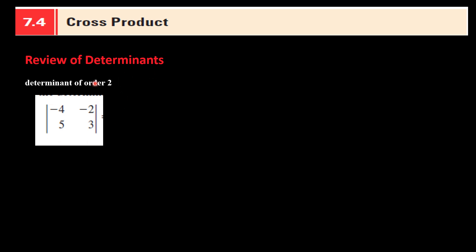So let's do a problem with this 2 by 2 matrix, and we have to find its determinant. To find the determinant, we do 4 times negative 3 — the arrow goes in this direction — and then we do negative 4 times 3. When you go in this direction, you have to put a negative, and then 5 times negative 2.